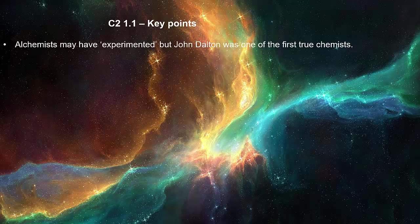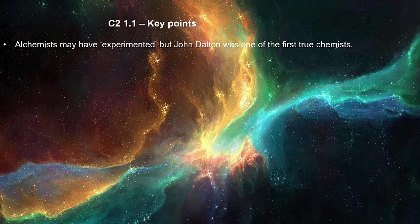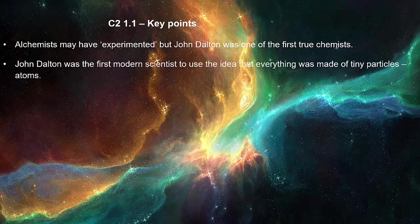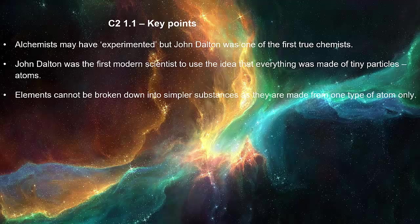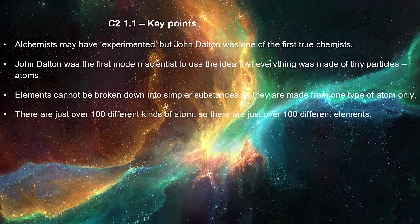Alchemists may have experimented, but John Dalton was one of the first true chemists. John Dalton was the first modern scientist to use the idea that everything was made of tiny particles, atoms. Elements cannot be broken down into simpler substances as they are made from one type of atom only. There are just over 100 different kinds of atom, so there are just over 100 different elements.